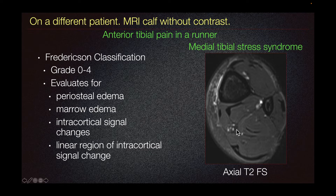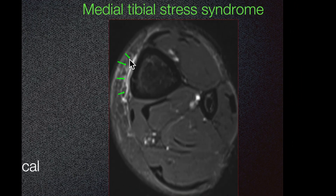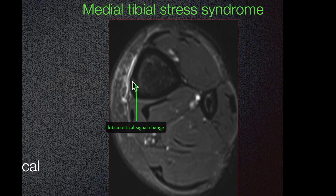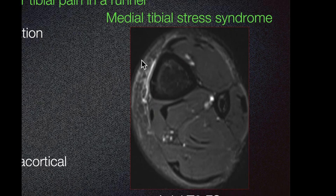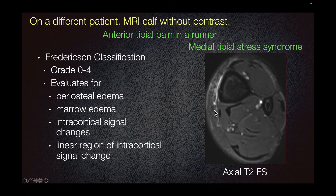For this patient, we can see periosteal edema characterized by T2 hyperintensity, along with some intracortical signal change and some bone marrow edema. The patient does not have any signal abnormality of the calf muscles, arguing against the presence of exertional compartment syndrome in this specific patient.